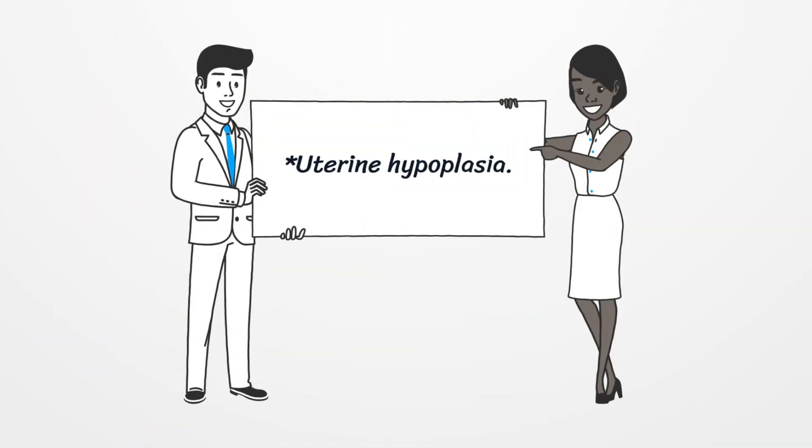Uterine hypoplasia. Primary amenorrhea results from underdevelopment of the uterus, which is detectable on physical examination.